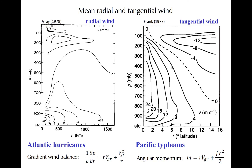The mean radial wind and primary circulation are shown here. Although the left panel is derived from observations of Atlantic hurricanes and the right panel is from Pacific typhoons, the fundamental circulation structures are similar. Pressure is on the y-axis and radius is on the x-axis — in kilometers on the left and degrees of latitude on the right, which is about 111 kilometers per degree. For radial wind, negative values indicate flow toward the center, occurring in the boundary layer with a maximum magnitude around 950 millibars. Radial outflow is seen in the upper troposphere. The tangential wind, or primary circulation, is approximately in gradient wind balance and becomes larger as one gets close to the center.